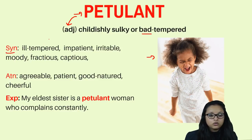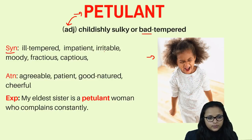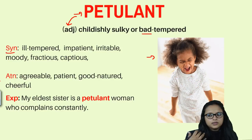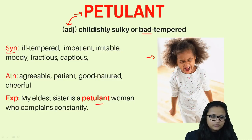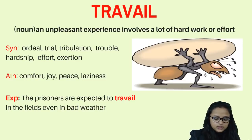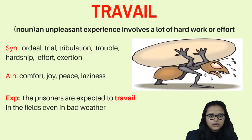Synonyms for petulant are: ill-tempered, impatient, irritable, moody, fractious, and captious. Antonyms are: agreeable, patient, good-natured, and cheerful. Example sentence: 'My eldest sister is a petulant woman who gets angry very easily and complains constantly.'